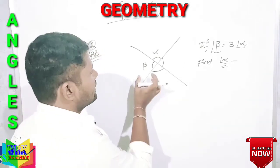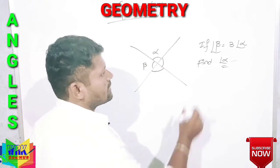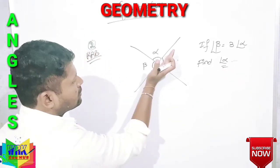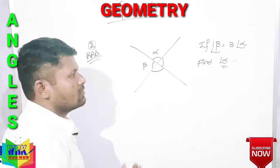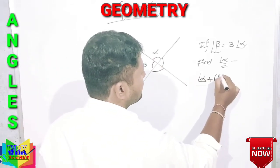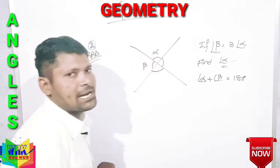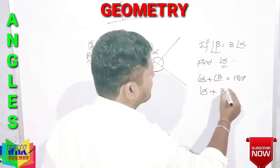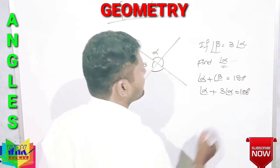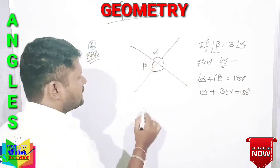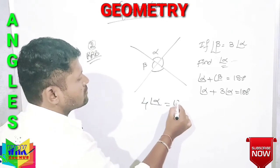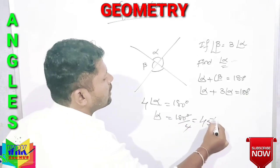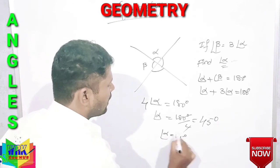Third problem — also a previous question. Angles beta and alpha are given; the condition is angle beta equals 3 times angle alpha. Find alpha. Since alpha plus beta form a straight angle, alpha plus beta equals 180 degrees. Substituting: alpha plus 3 alpha equals 4 alpha equals 180 degrees. So angle alpha equals 180 divided by 4, which equals 45 degrees.